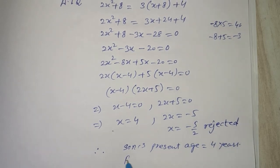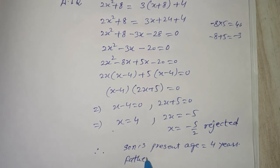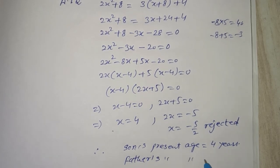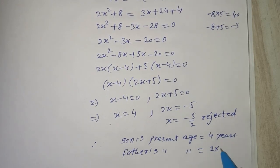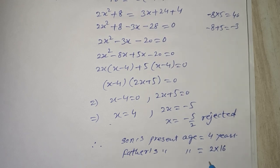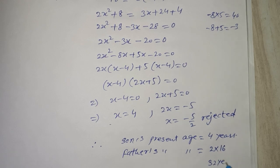Father's present is equal to 2x square. 2 into x value 4, 4 into 4 is 16, 16 into 2 is 32, 32 years.